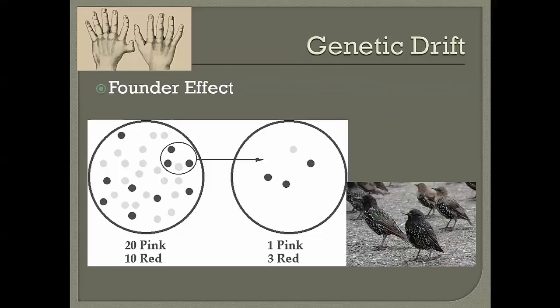One type of genetic drift is the founder effect, when a portion of a population randomly leaves and forms a new population. For example, some birds blown off the mainland form a new population on the Galapagos. That new population may show different allele frequencies from the original — if the original had 20 pink to 10 red (a 2-to-1 ratio), the founding group might land at 1 pink to 3 red, not representing the original population.